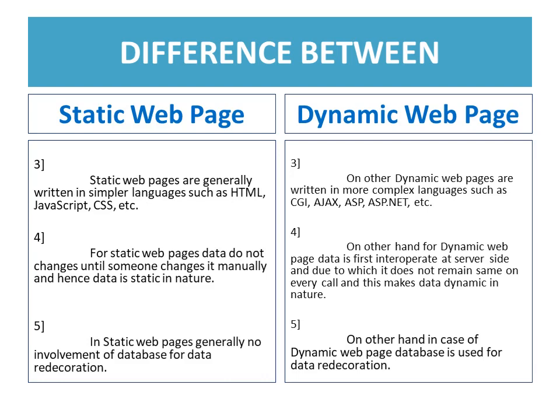On the other hand, dynamic web pages are written in more complex languages such as ASP.NET, in which data is rendered after some interpretation and has the capacity to produce distinctive content for different calls. This interpretation process makes data dynamic in nature, and due to this, dynamic web pages become more complex in complexity as compared to static web pages.